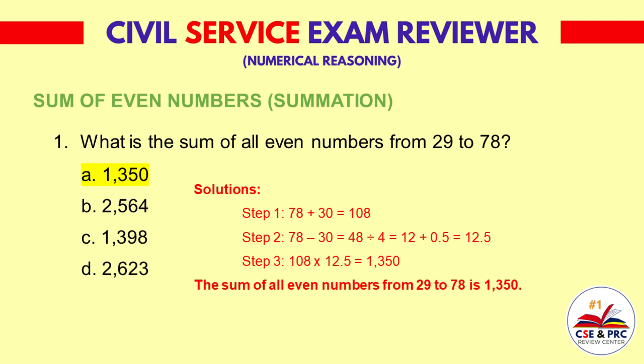Step 2: 78 minus 30 is equal to 48. 48 divided by 4 is equal to 12, plus 0.5 is equal to 12.5. Step 3: 108 times 12.5 is equal to 1,350. The sum of all even numbers from 29 to 78 is 1,350.